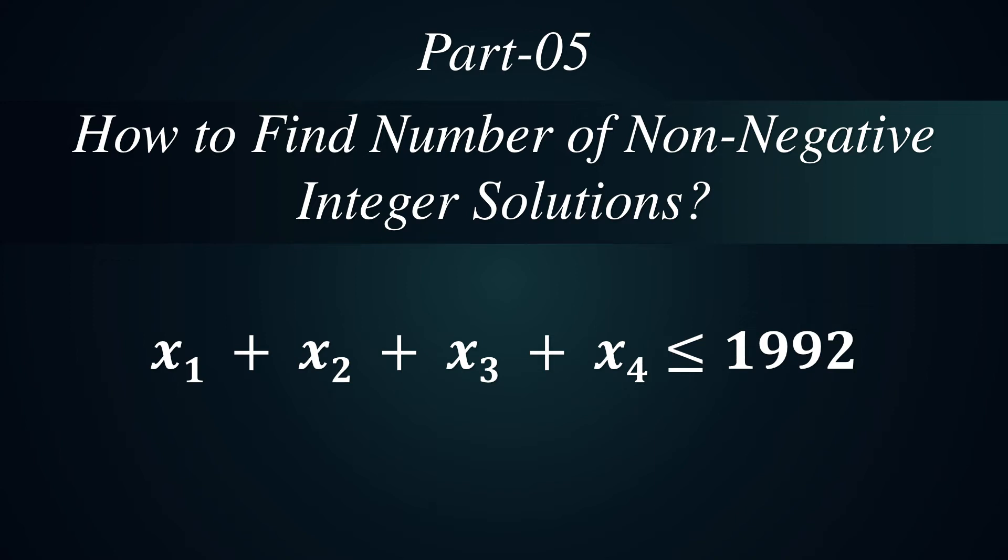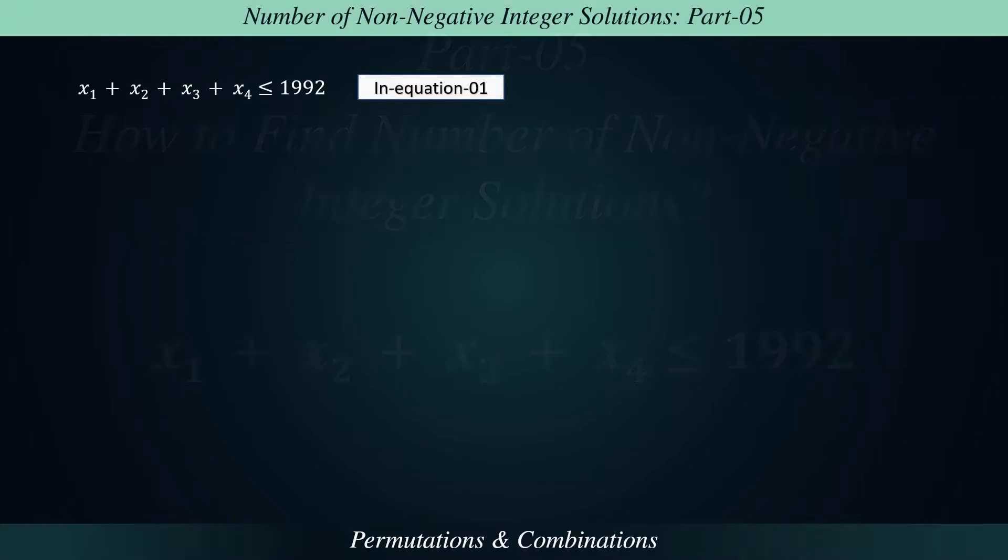Hello and welcome to part 5 of the lecture series. In this video, you will learn how to find the number of non-negative integer solutions of any equation x1 plus x2 plus x3 plus x4 is less than or equal to 1,992, where x1, x2, x3, and x4 are non-negative integers.